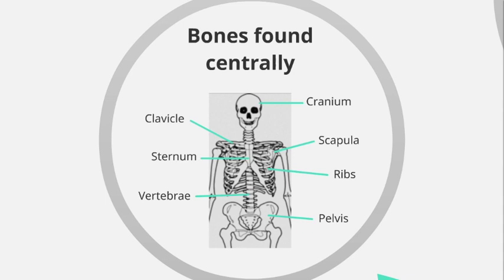The seven central bones are: the cranium, the clavicle, the scapula, the sternum, the ribs, the vertebrae, and the pelvis.